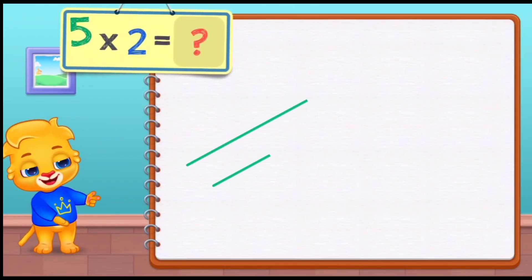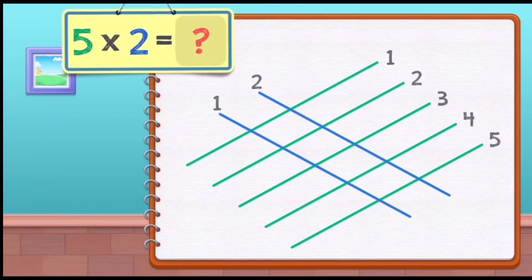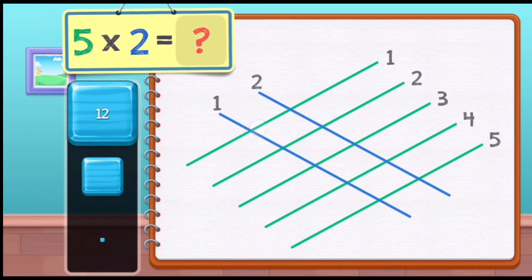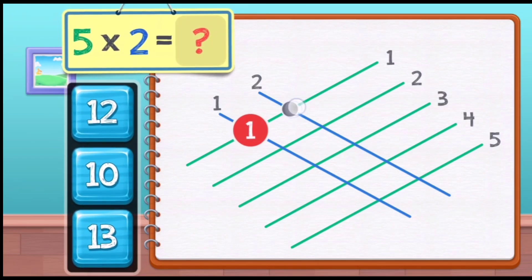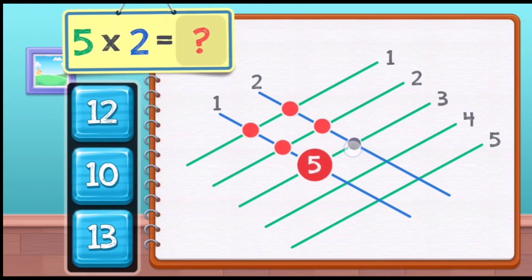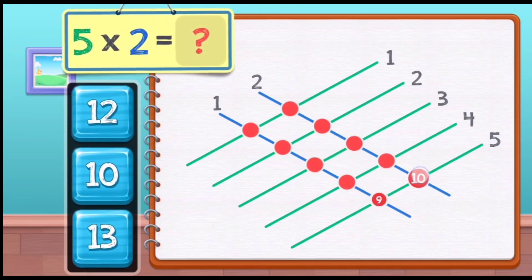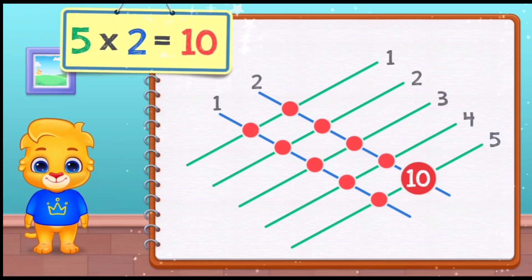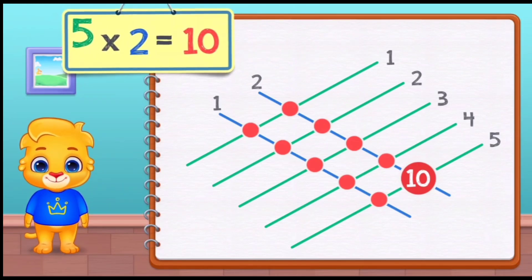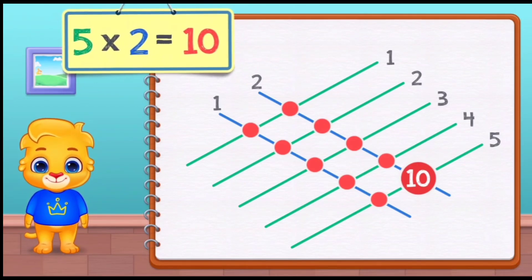Five times two equals: one, two, three, four, five, six, seven, eight, nine, ten. Five times two equals ten.